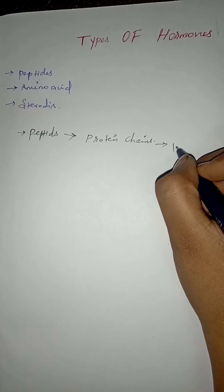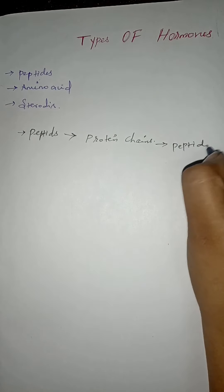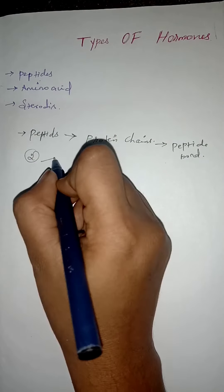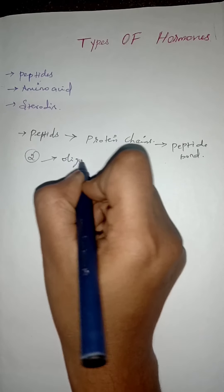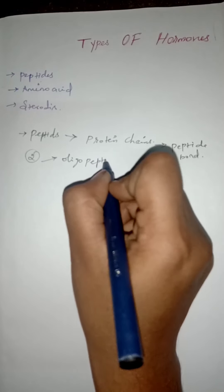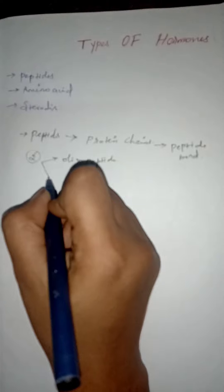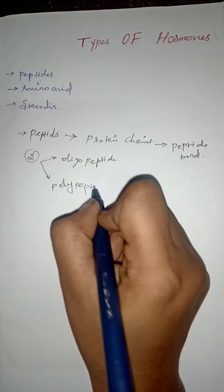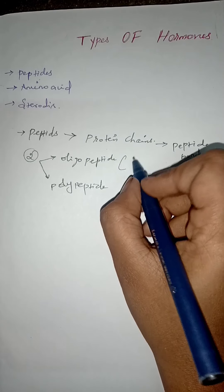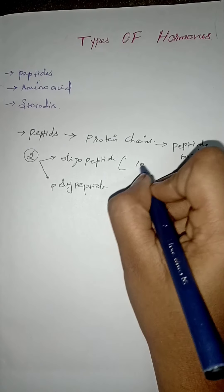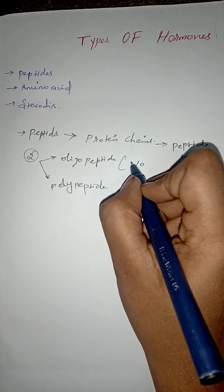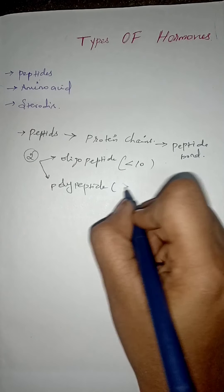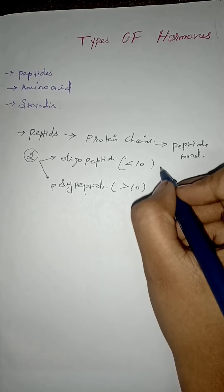Peptide hormones are classified into two types: oligopeptide and polypeptide. Oligopeptide means the peptide chain has less than 10 units, and polypeptide means greater than 10 chains.